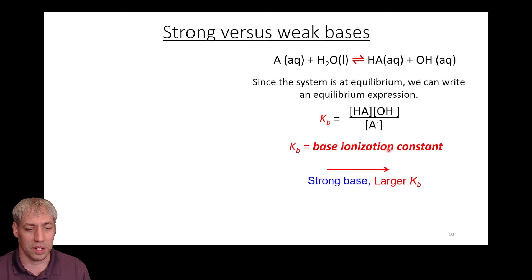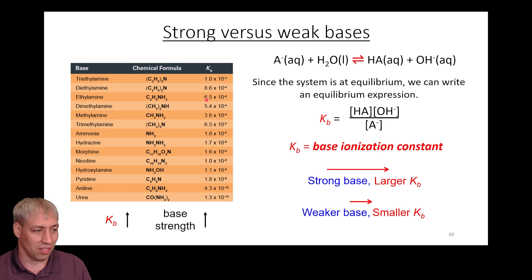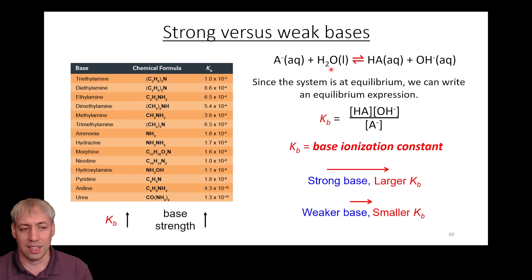The larger the Kb, the more it favors the product side — meaning it wants to steal a proton. Larger Kb values mean a stronger base; smaller Kb values mean a weaker base. We have this numerical scale where larger numbers indicate stronger bases. This equilibrium constant follows the same rules from chapter 13: bigger Kb favors products, meaning this base really wants to steal protons.